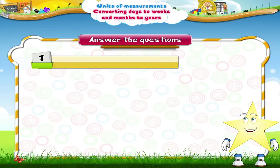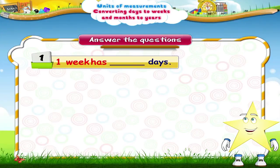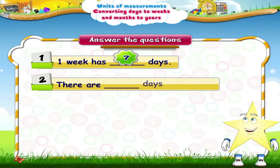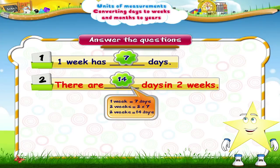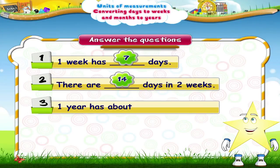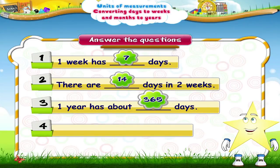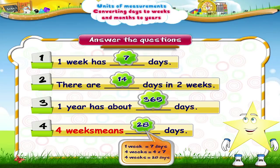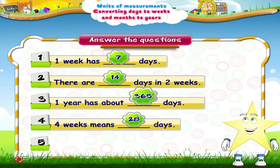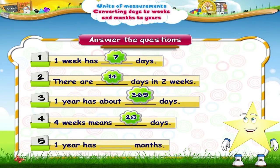Let us revise what we have studied. One week has how many days? One week has 7 days. There are how many days in 2 weeks? There are 14 days in 2 weeks. One year has about how many days? One year has about 365 days. Four weeks means how many days? Four weeks means 28 days. One year has how many months? One year has 12 months.